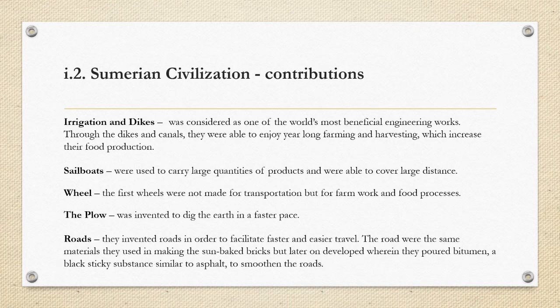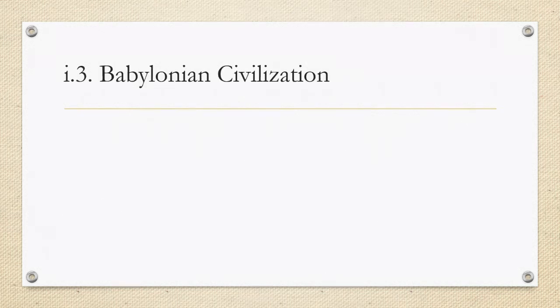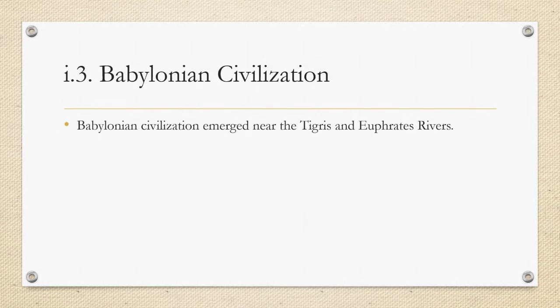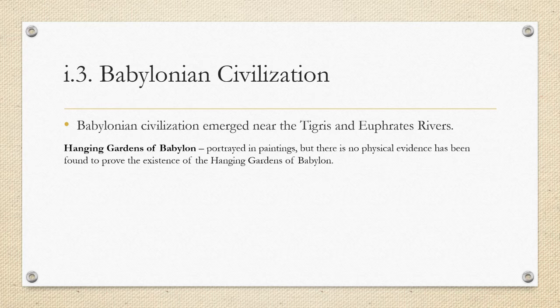The bitumen was used to smooth the roads, especially during rain, making transportation easier and faster. Next is the Babylonian civilization. Babylon emerged near the Tigris and Euphrates rivers in the Middle East. Their greatest contribution was the Hanging Gardens of Babylon — there are paintings and records of it, but no physical evidence has been found to prove that the Hanging Gardens of Babylon truly existed.